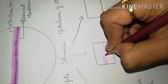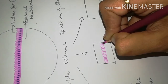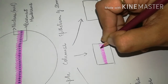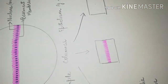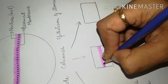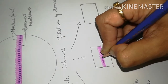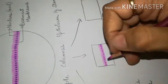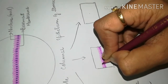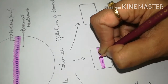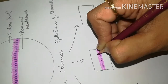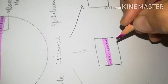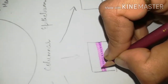Then the next variety — simple columnar epithelium along with microvilli. We will again draw simple columnar epithelium, same cells having height more than width, fill the cytoplasm of each and every cell, and draw the nucleus in each and every cell in the lower half. Then we will draw the microvilli. Microvilli are somewhat smaller than the cilia. Cilia consist of a 9+2 arrangement of microtubules, while microvilli contain actin myofilaments. Like this you have to draw microvilli.